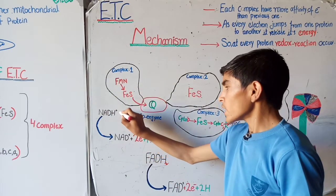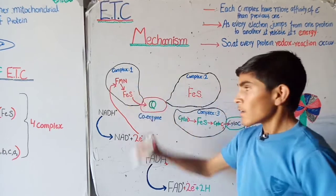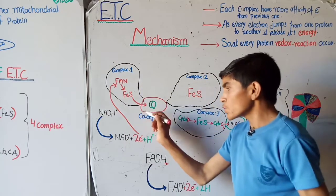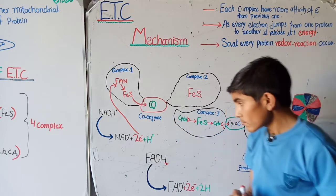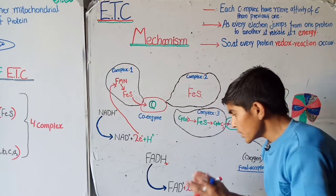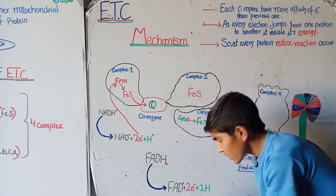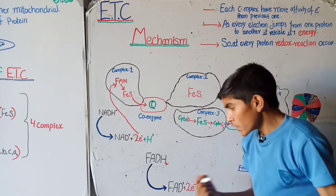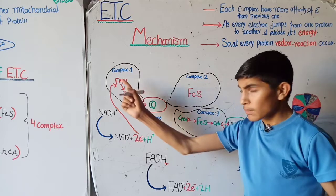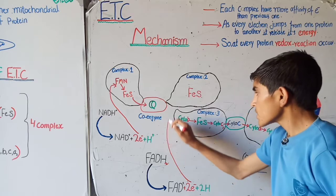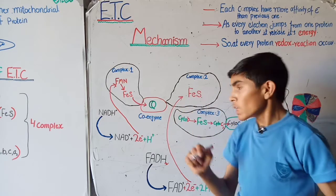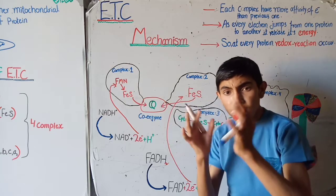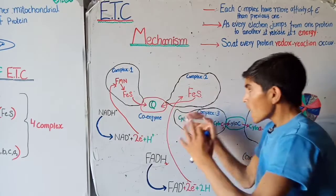One molecule of NADH enters complex number one, where NADH is oxidized to NAD+, releasing two electrons and hydrogen. These two electrons are carried by the flavoprotein, then passed to the iron-sulfur protein, and then passed to ubiquinone. FADH2 enters at complex number two, where it is reduced to FAD, also releasing two electrons and two hydrogen. These electrons are also carried by the iron-sulfur protein to ubiquinone.